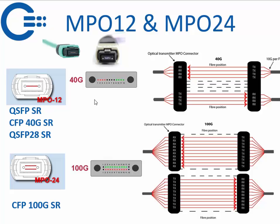The MPO 12 uses only the four outer lanes — it is a standard with 12 fibers inside but only the four outer lanes are active: four to send and four to receive. The inner four fibers are not used. For the MPO 24, the top row and the bottom row communicate with each other, and the outer two fibers on each side are not used.